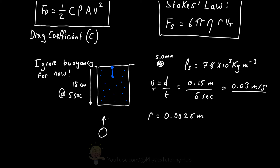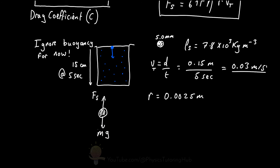While the particle falls at terminal velocity, two forces act on it: the Stokes drag force Fs pointing upward, and the force due to gravity — the particle's mass times the acceleration due to gravity. Buoyancy plays a small part but we'll ignore it for now because the density of the steel ball bearing is larger than the density of honey, so the viscosity will only be an approximation.